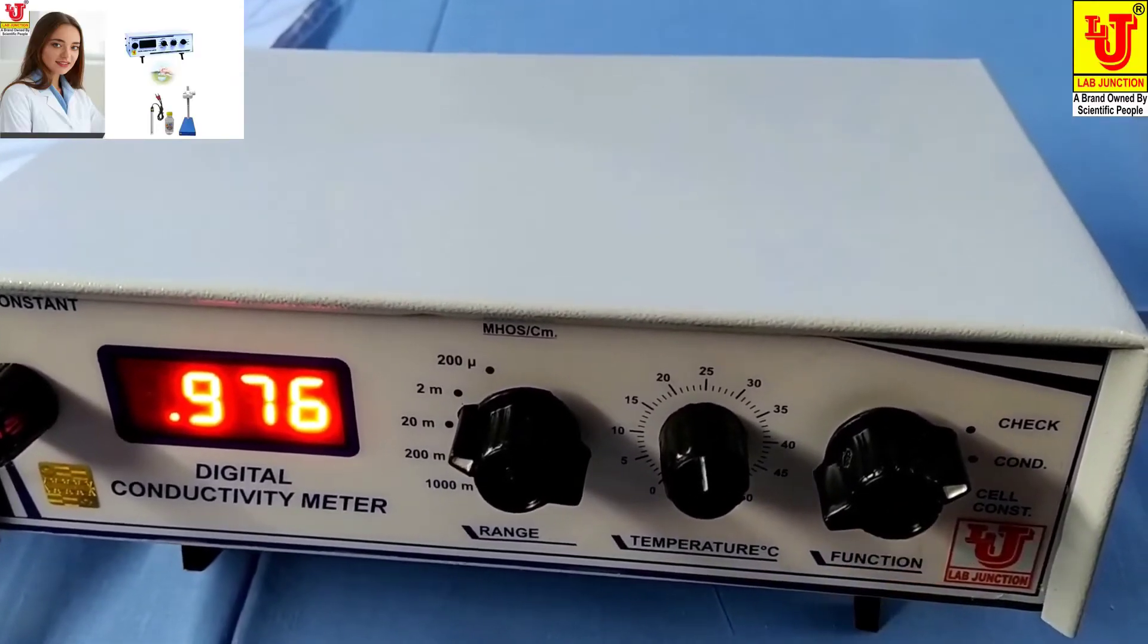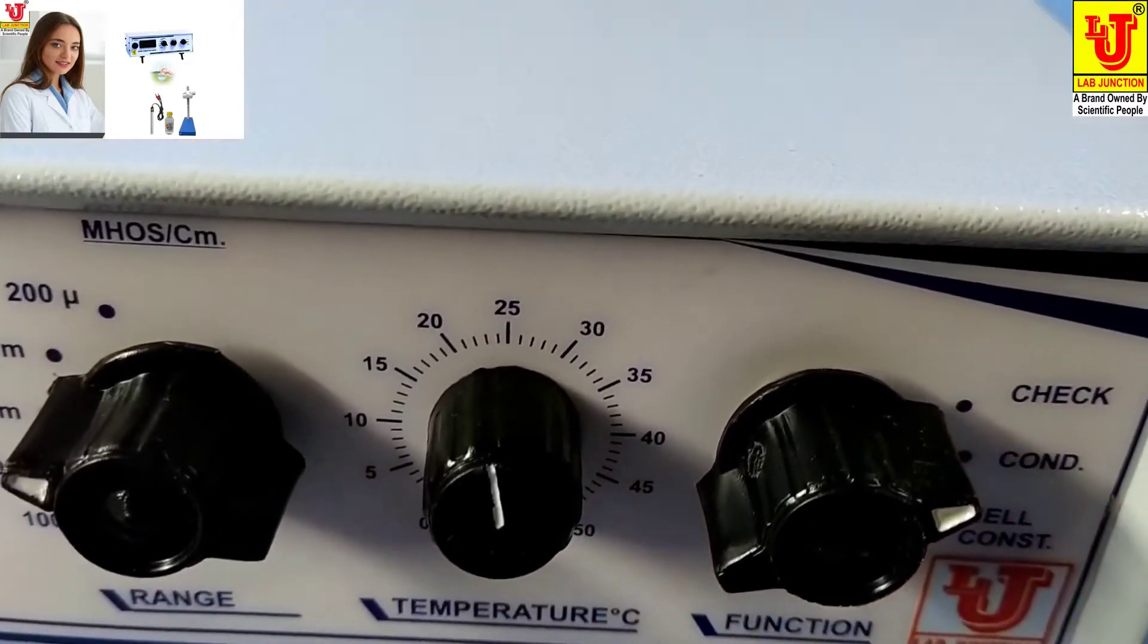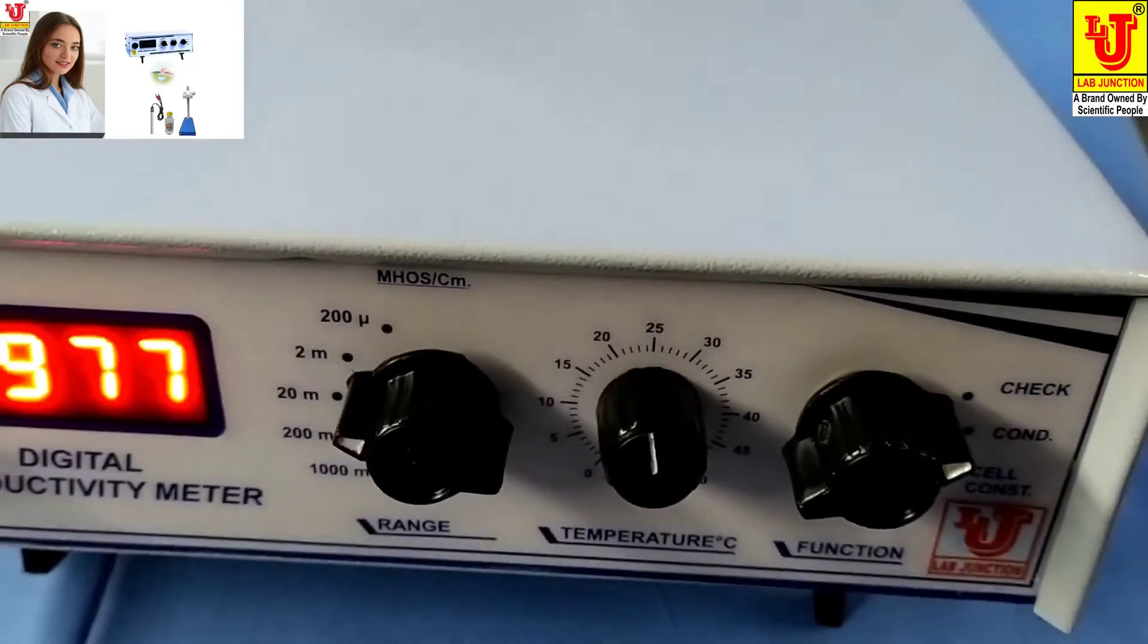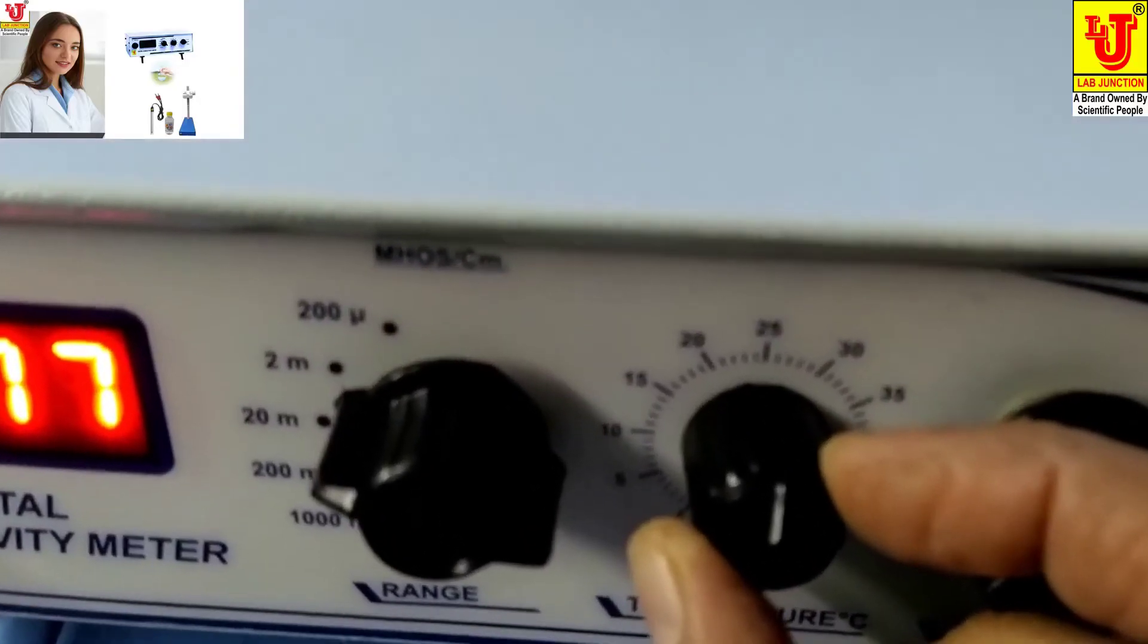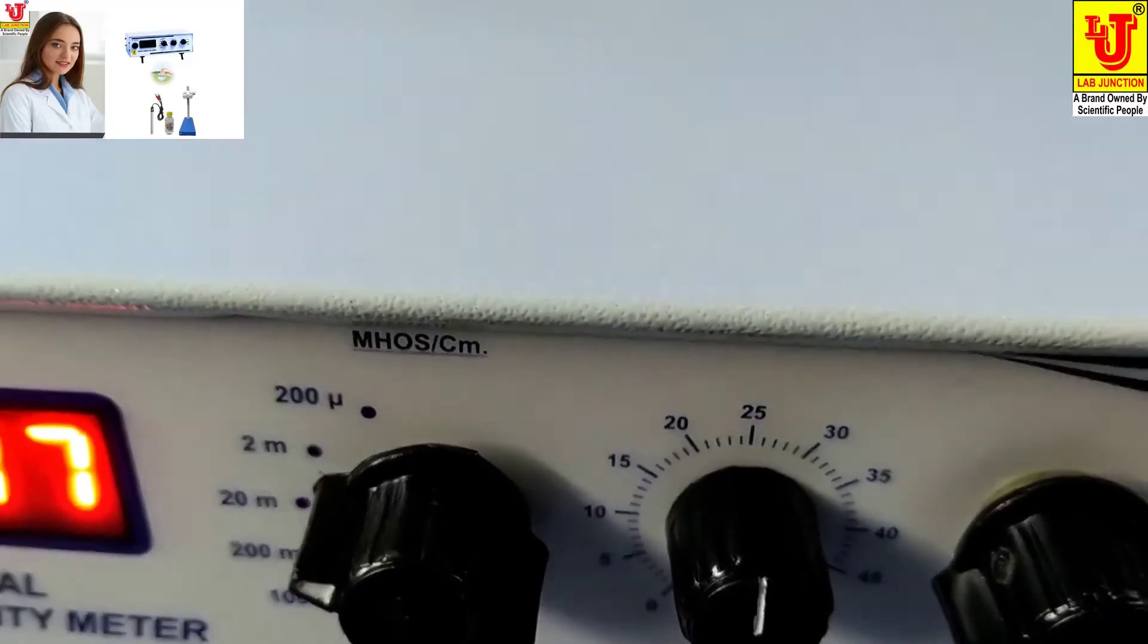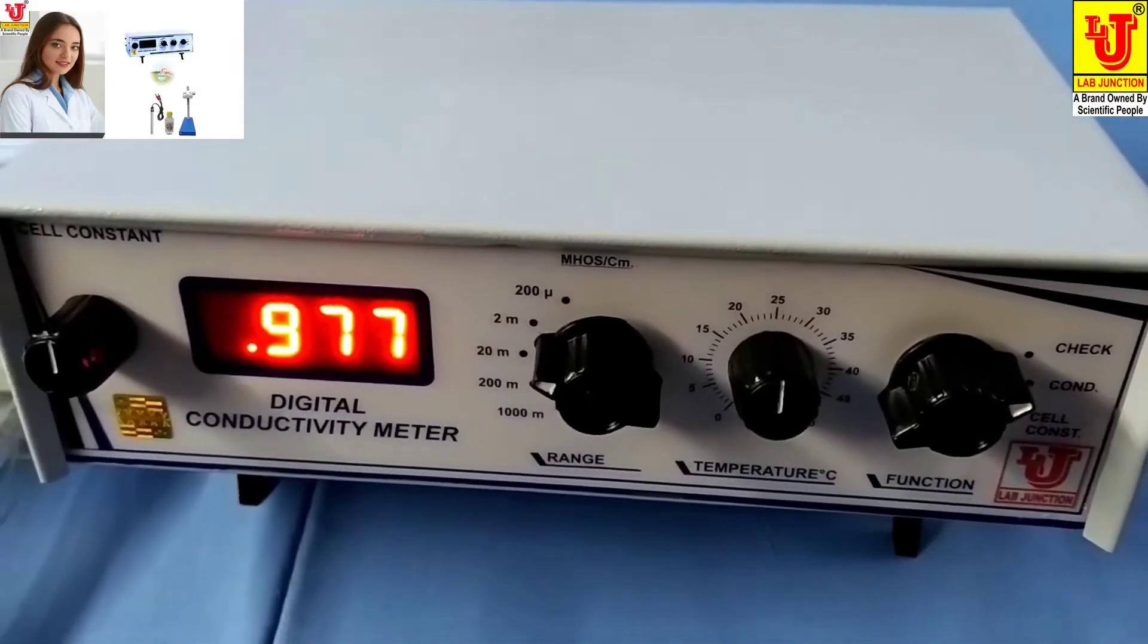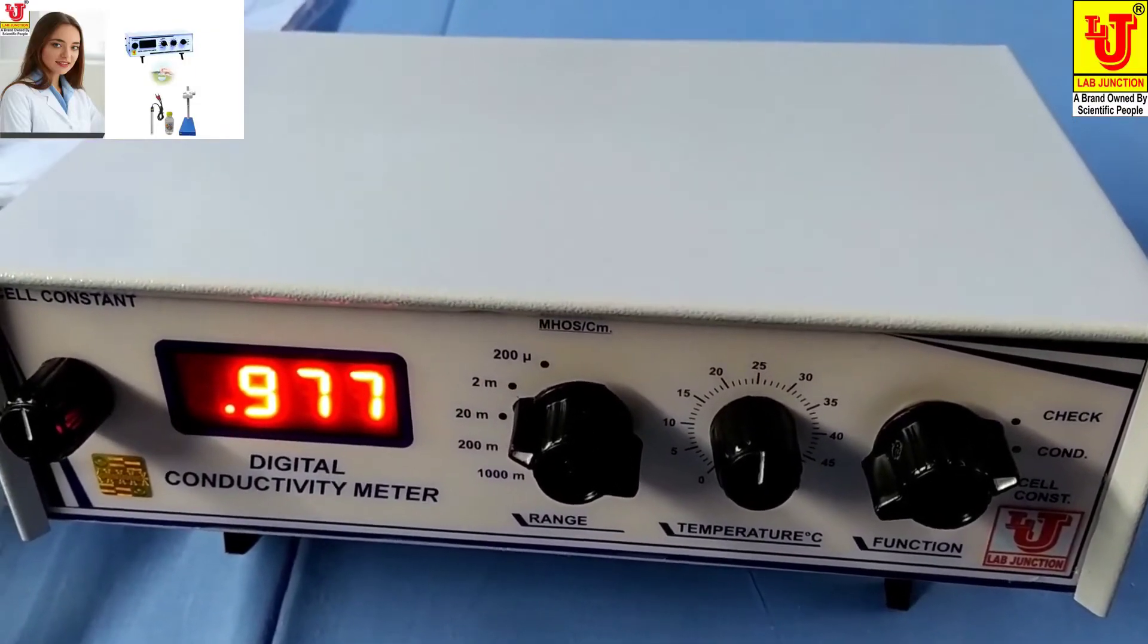In the function control, there are three positions: check, conductivity, and cell constant. First of all, you have to set temperature to 25 degrees. If you have a different temperature, then you can set it to your desired temperature.